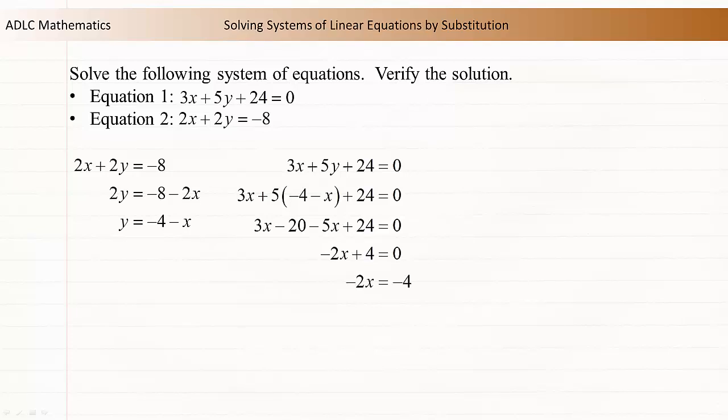Subtract 4 from both sides to isolate the term containing x. Divide both sides by -2 to isolate x. Now we know that x = 2.